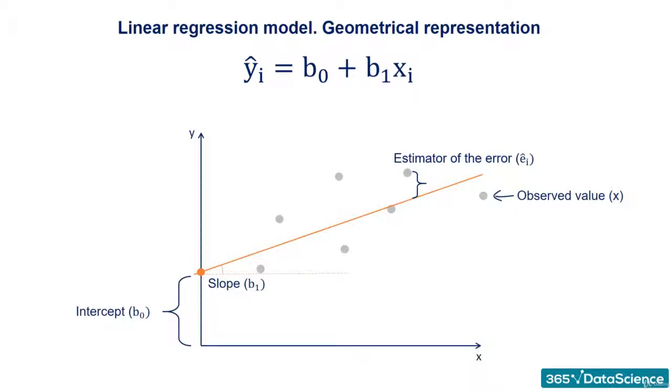Now, if you draw a perpendicular from an observed point to the regression line, the intercept between that perpendicular and the regression line is a point with a y-value equal to y-hat.